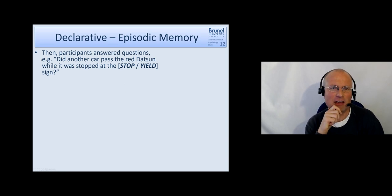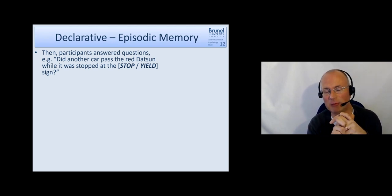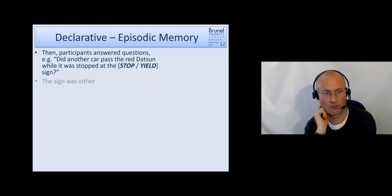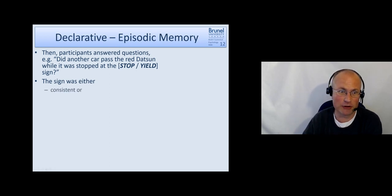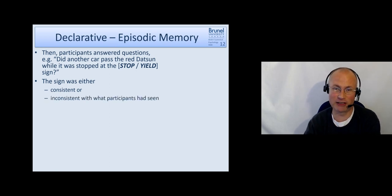An example is 'did another car pass the red Datsun'—this is the car which was waiting and was causing the accident—'while it was stopped at the' and they manipulated that: either stop sign or yield sign. The sign, the word they used could either be consistent with what they had seen, so in the slide they have seen a stop sign and you were saying 'stopped at the stop sign,' or inconsistent with what they have seen, so they have seen a stop sign but you ask 'why it was stopped at the yield sign.'